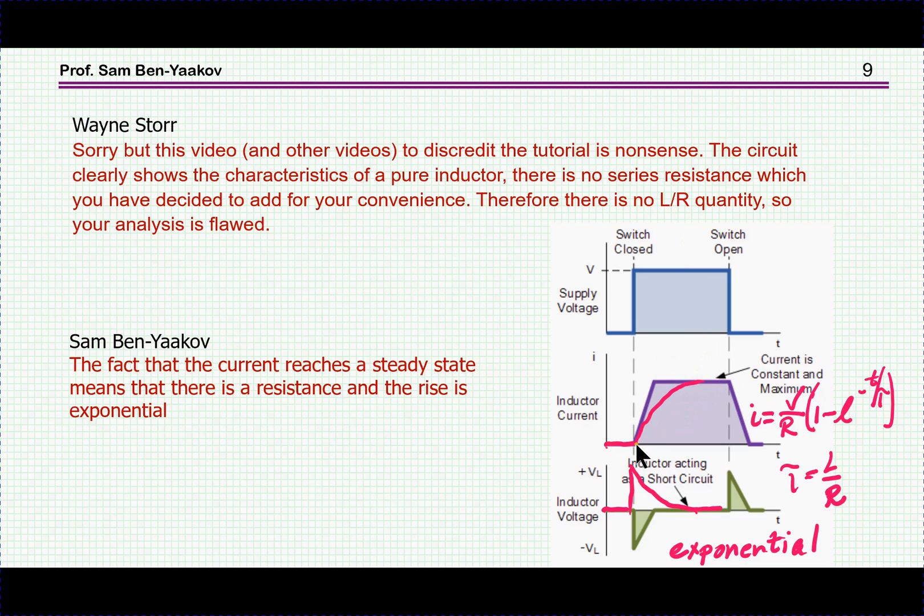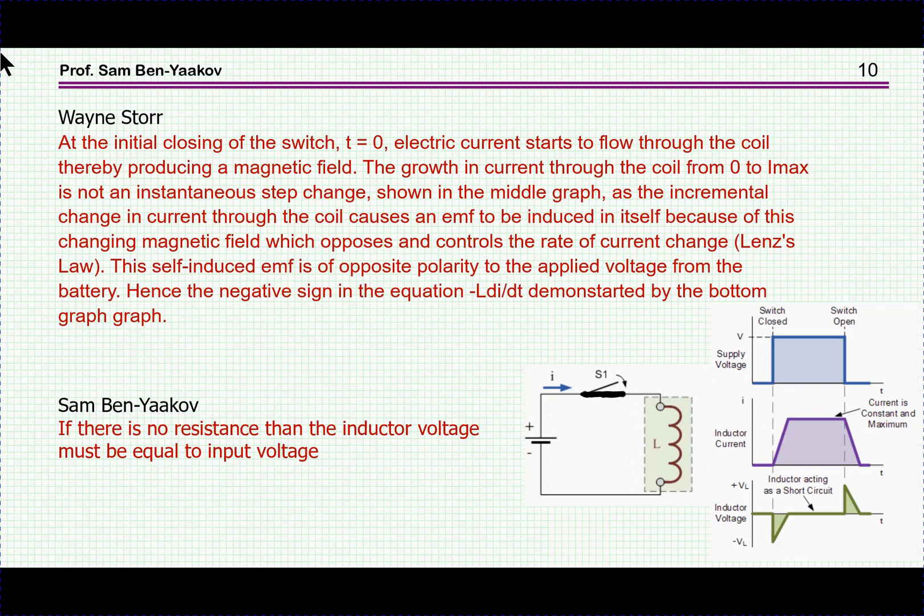Then it says: At the initial closing of the switch, t equal to zero, electric current starts to flow through the coil thereby producing a magnetic field. The growth in current through the coil from zero to I-max is not an instantaneous step as the incremental change in the current through the coil causes an EMF to be induced in itself because of this changing magnetic field which opposes and controls the rate of current change. The self-induced EMF is of opposite polarity to the applied voltage from the battery, hence the negative sign in the equation demonstrated by the bottom graph.